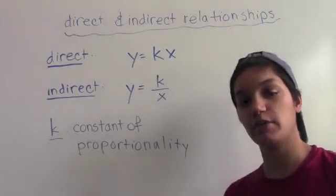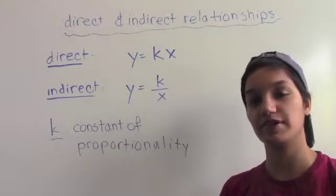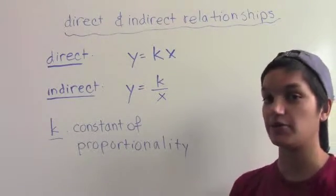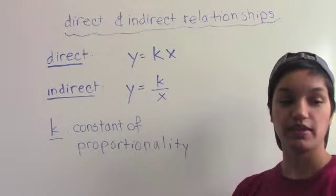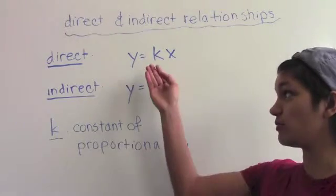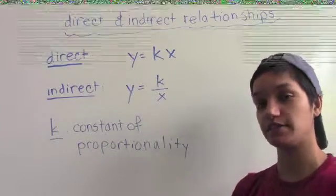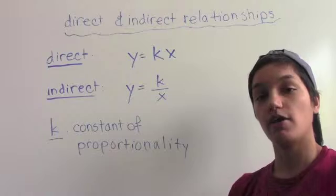Hi, Chris. We're going to talk about what it means for two variables to vary directly with each other. Two variables in an equation vary directly with each other or have a direct relationship if the equation has the form y equals k times x, where k is a constant and y and x are the variables.